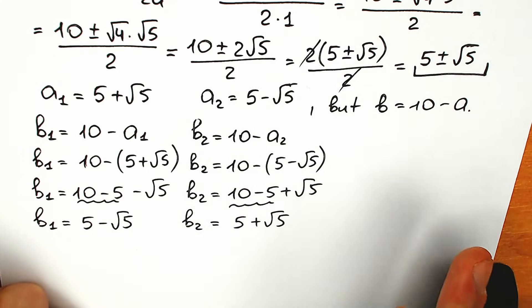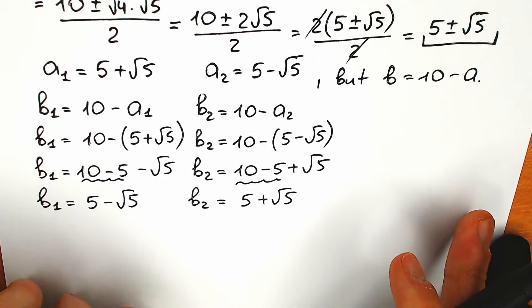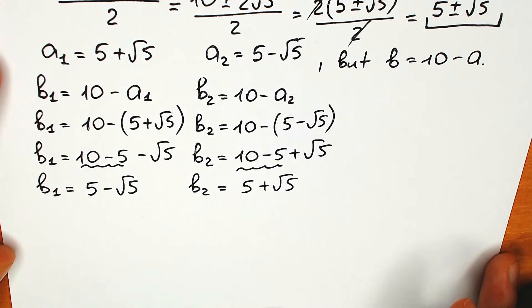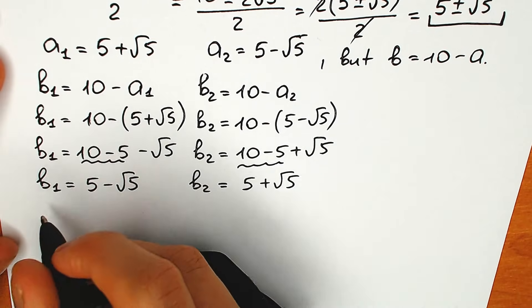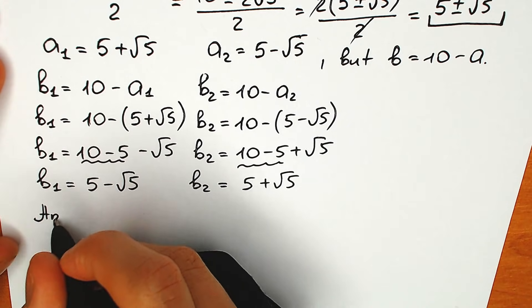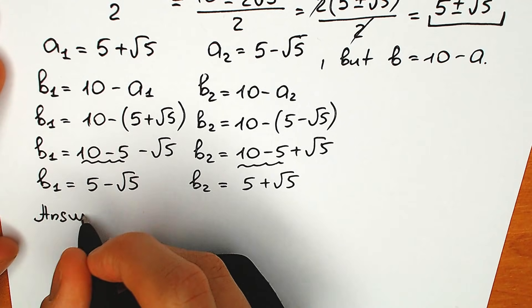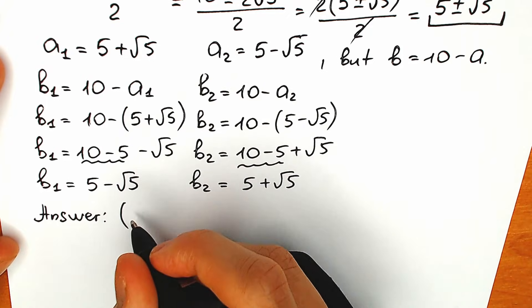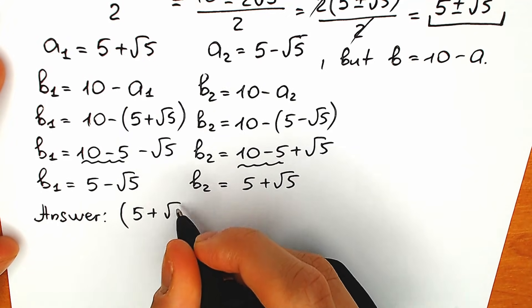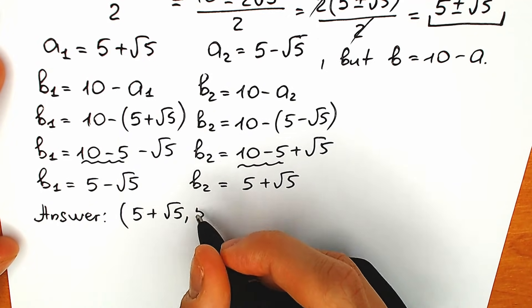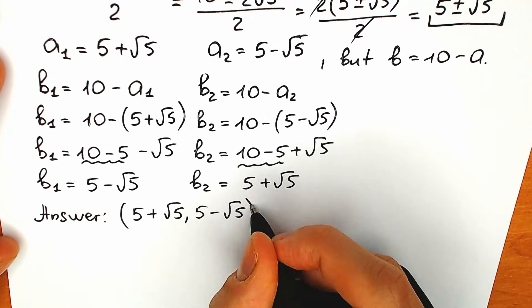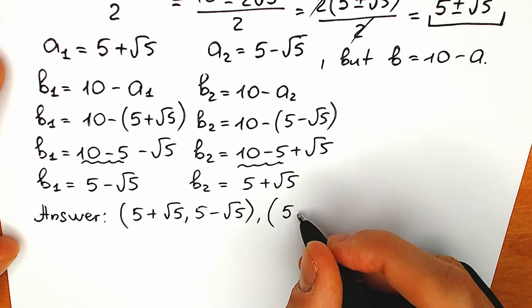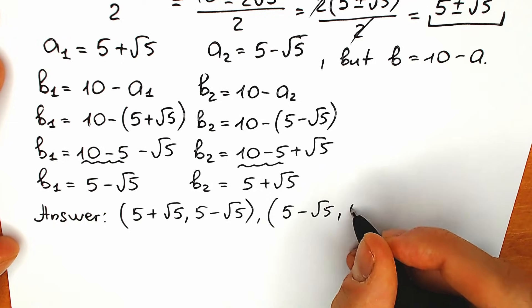So we have our answer. Let's gather all the pairs together and write the final answer. First pair: a first equals 5 plus root 5, b first equals 5 minus root 5. Second pair: a second equals 5 minus root 5, b second equals 5 plus root 5.